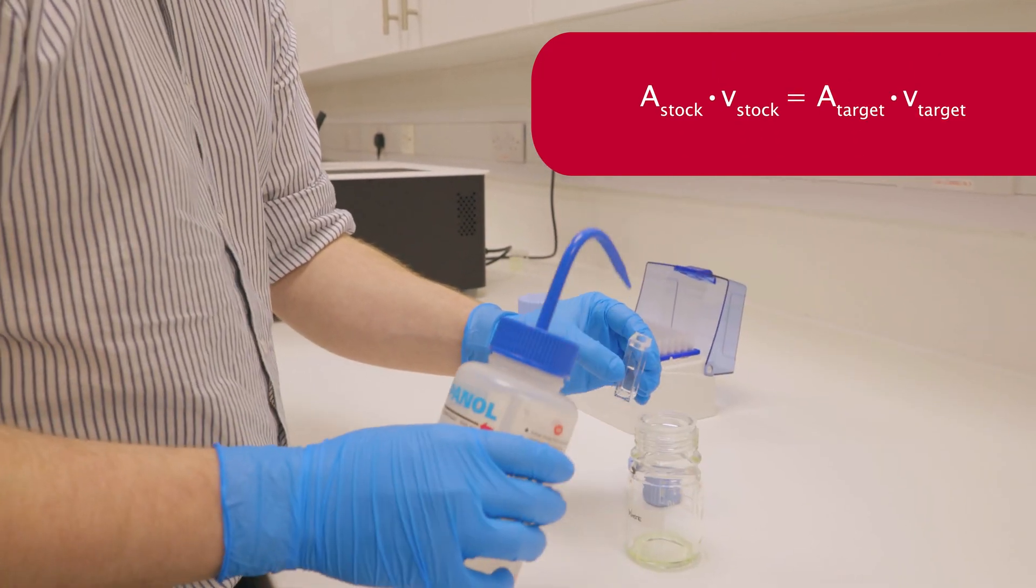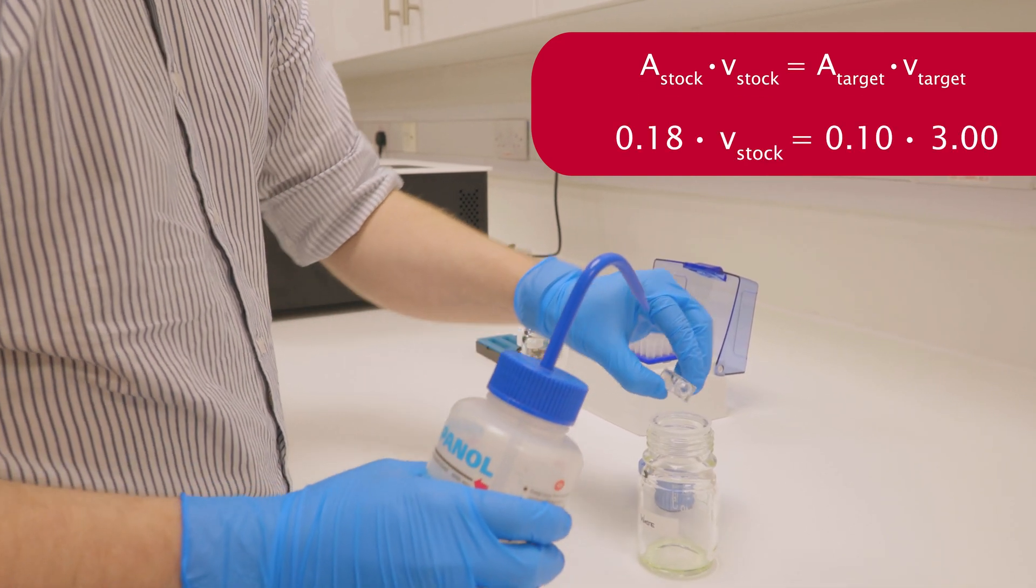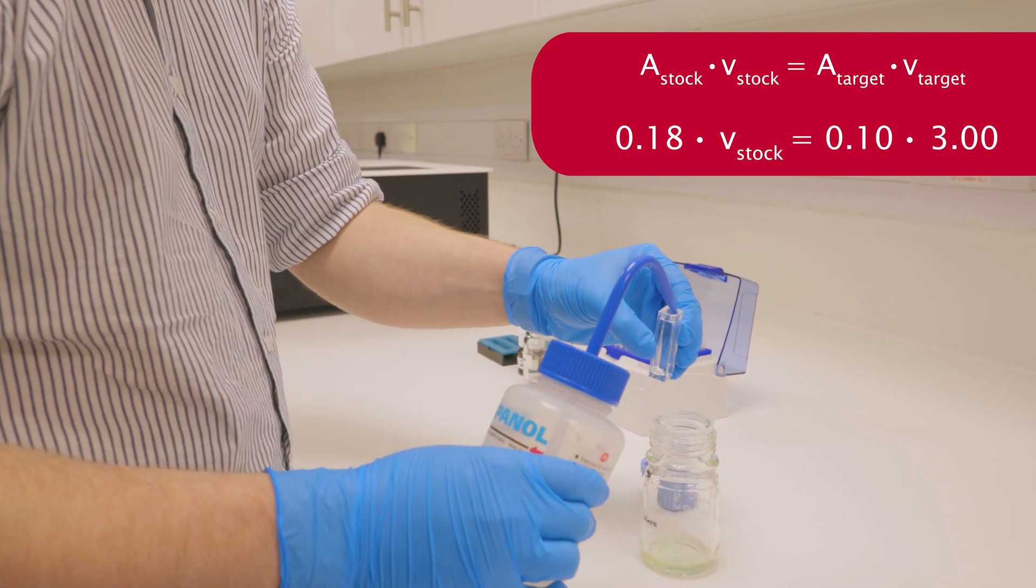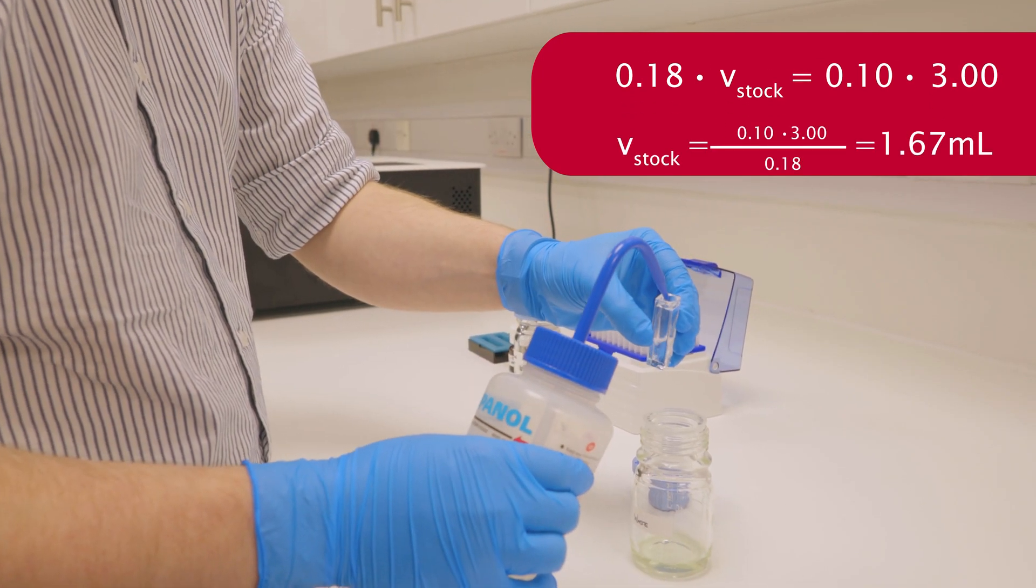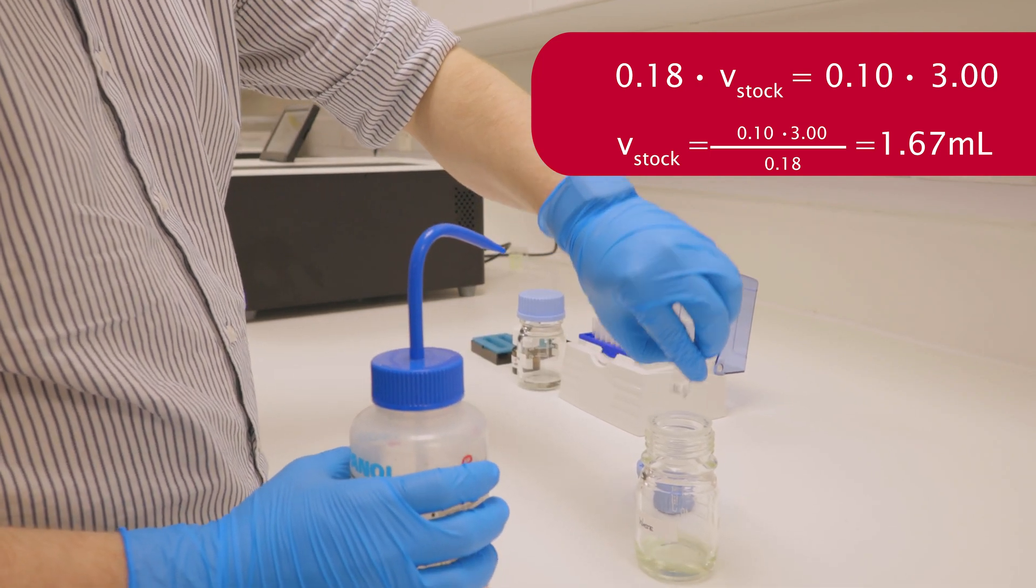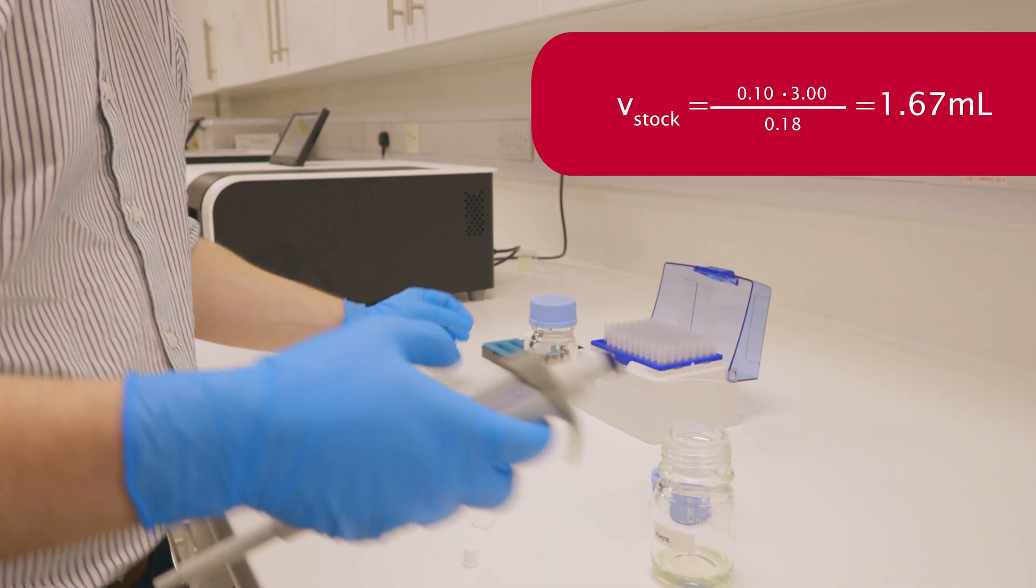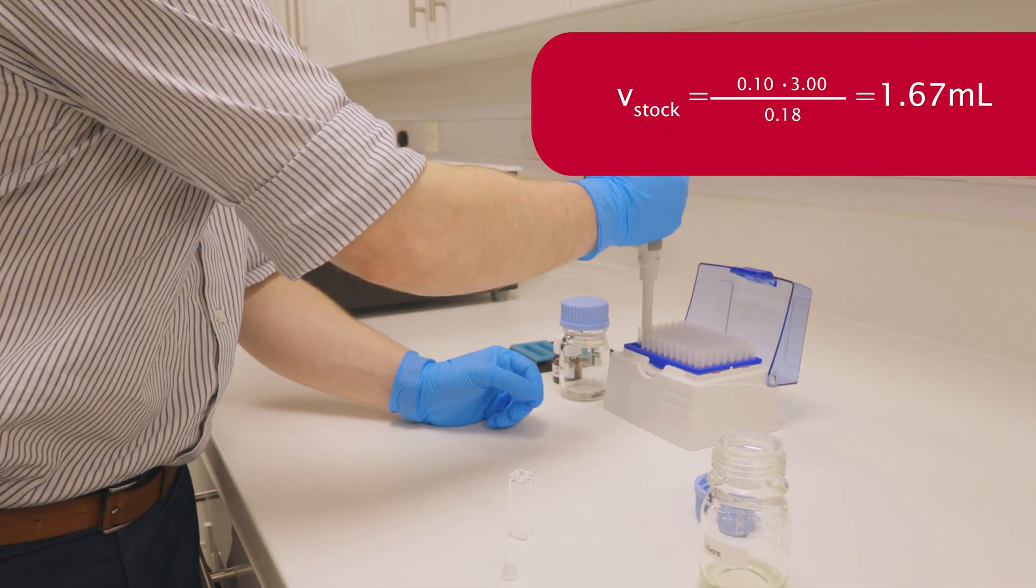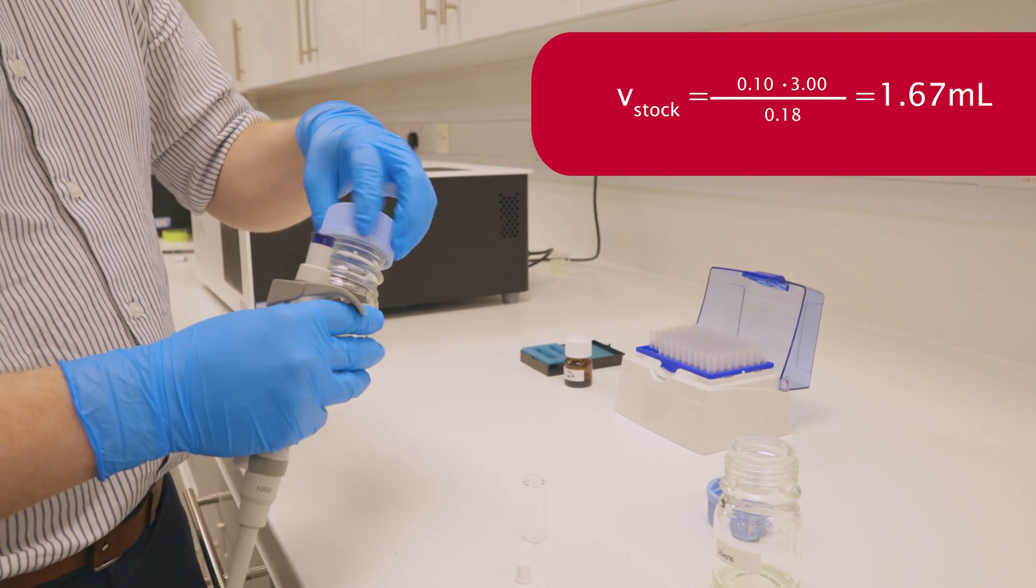Our stock solution absorbance was 0.18. Our target absorbance is 0.10, and our target volume is 3 milliliters, which we recommend for standard path length cuvettes. Rearranging and solving this equation, we determined that we require 1.67 milliliters of our stock solution diluted with 1.33 milliliters of solvent to produce our final 3 milliliter sample.